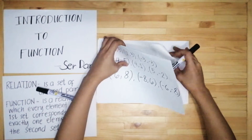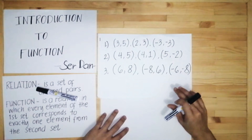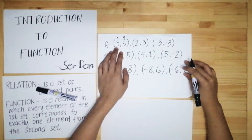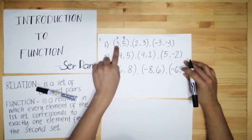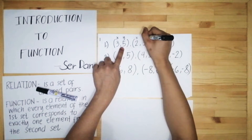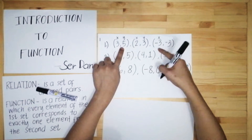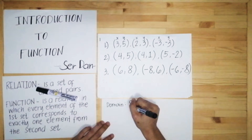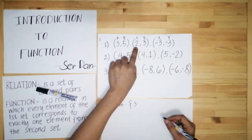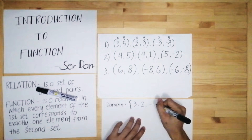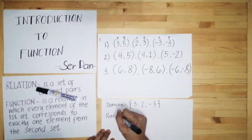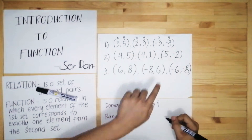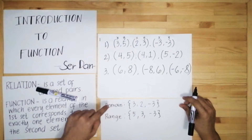Let's start with number one. We have the ordered pairs (3,5), (2,3), and (−3,−3). To understand this better, let's list down the domain and range. The x value always comes first before the y value. So the x value here is 3, the y value is 5; x is 2, y is 3; x is −3, y is also −3. The domain values are 3, 2, and −3. The range values are 5, 3, and −3.